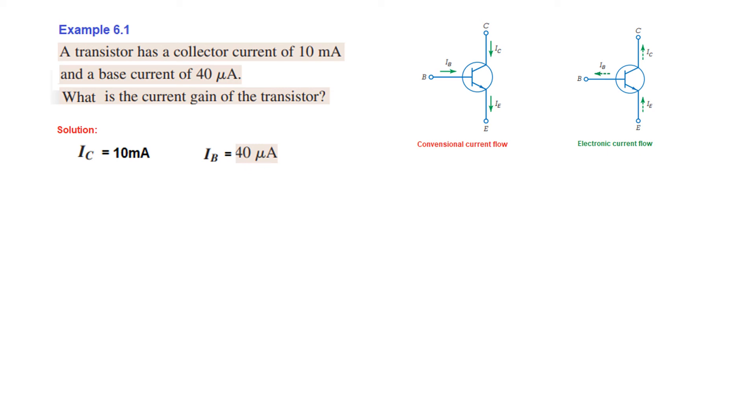And now we know the relation between the two. We have to find the current gain. So the formula for current gain we know is beta. Beta DC is IC over IB. And just plugging in the values, so 10 milliampere over 40 microampere, or 10 into 10 to the power 3 divided by 40 into 10 to the power minus 6. So this gives an answer 250. So beta DC is 250. So that is the current gain.